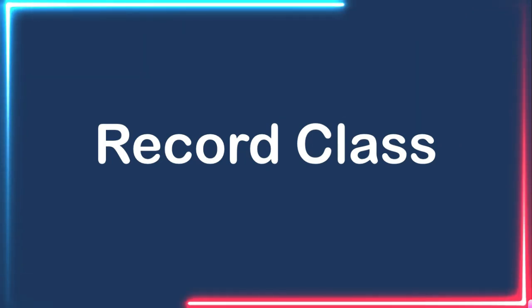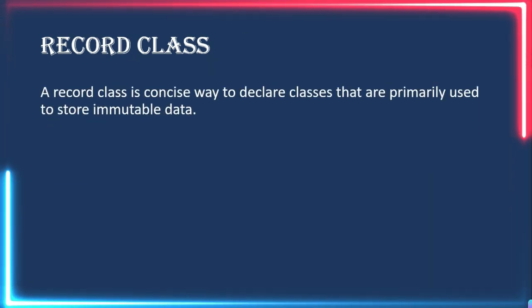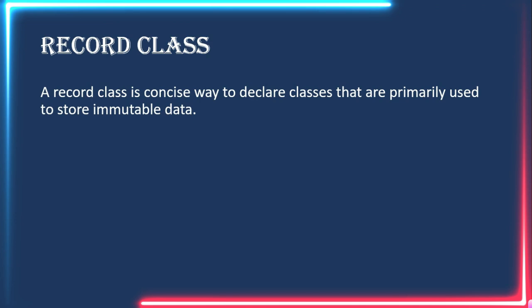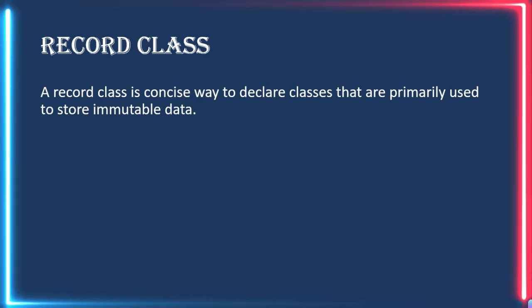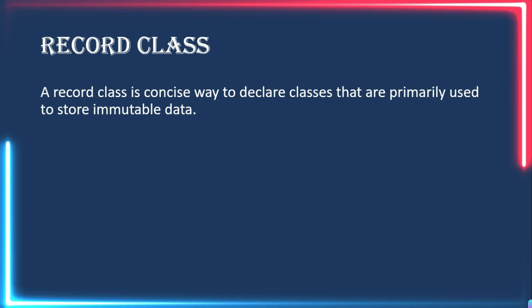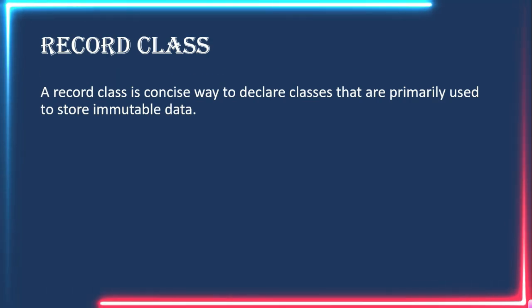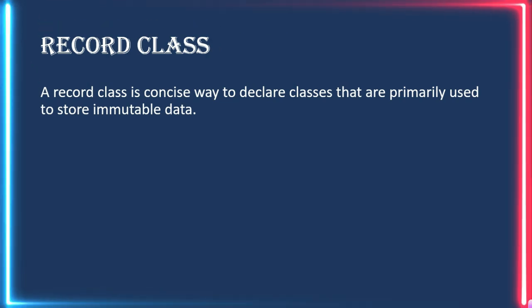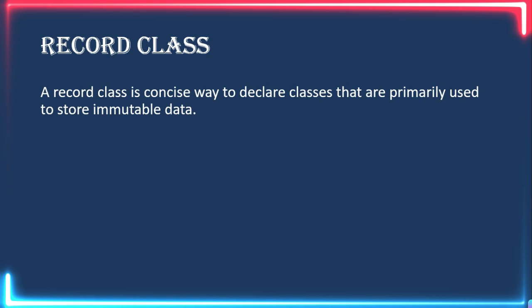In this video we are going to see about record class. A record class is a concise way to declare classes that are primarily used to store immutable data. Immutable classes are basically classes for which, once a value has been defined, we cannot change that value — like String is an immutable class. If we try to change the value, a new object will be created.